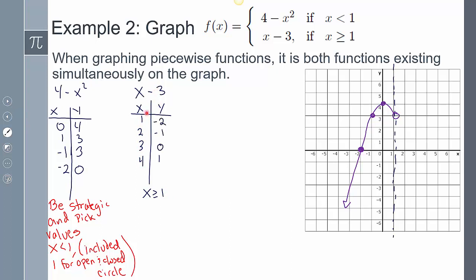Now plug in 1, plug in 2, plug in 3, plug in 4, and I'm going to get these values. And so now plotting those on the line, 1 negative 2, 2 negative 1, etc. Plotting those on the line, I can graph that.